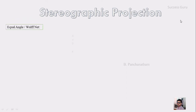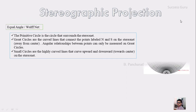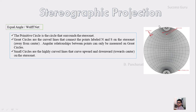The parts of the equal angle net are as follows: the outermost circle is called the primitive circle, the line that starts from the north pole and ends at the south pole is called the great circle, and the highly curved short lines are called the small circles, which start from the primitive circle and end at the primitive circle itself.